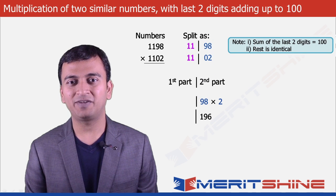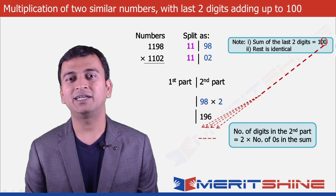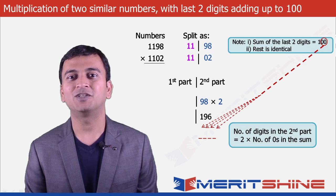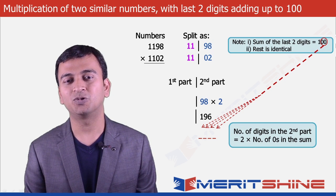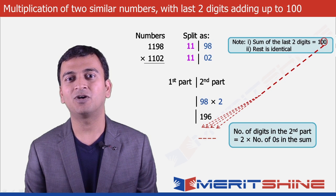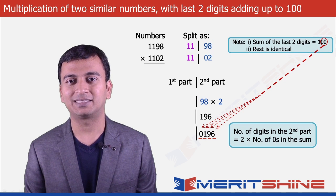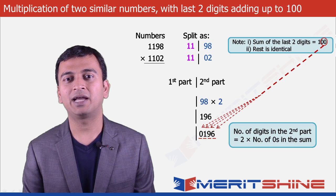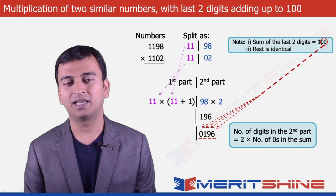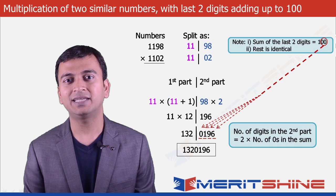Note that the number of digits in the second part equals twice the number of zeros in the sum of the last two digits. The sum was 98 + 02 = 100, giving us two zeros, so the number of digits would be 2 × 2 = 4. Since 196 has only three digits, we add a leading zero to make it 0196. For the first part, we take 11 — the identical part — and multiply it by one more than itself, which is 12. So 11 × 12 = 132. Combining these two parts, our final answer is 1320196.